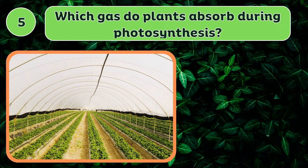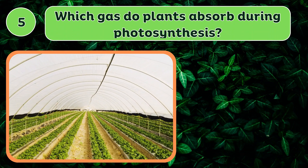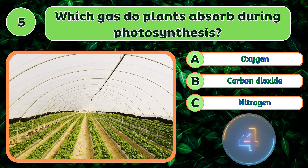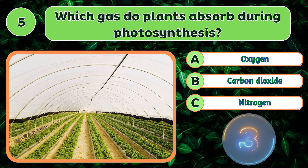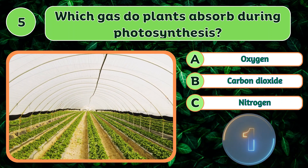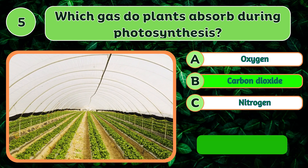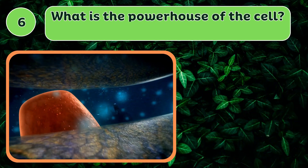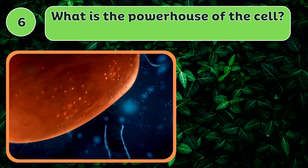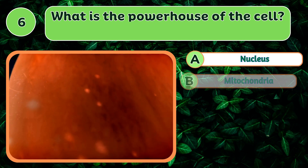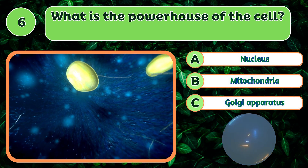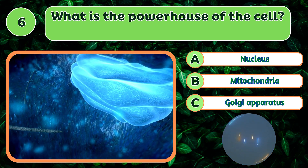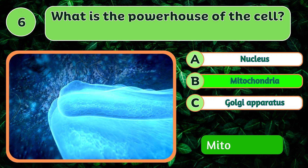Which gas do plants absorb during photosynthesis? Carbon dioxide. What is the powerhouse of the cell? Mitochondria.